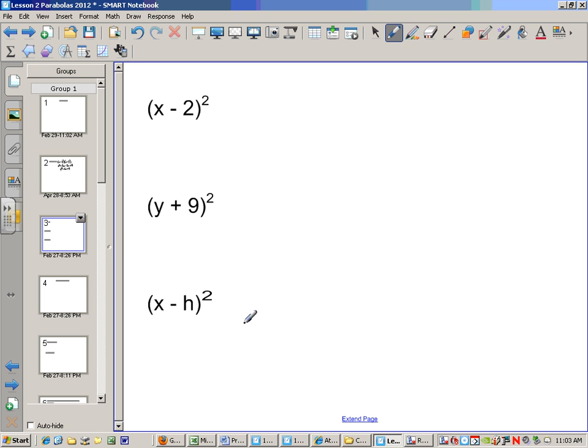Take a second and pause the video and do these three on your own. This one will be x squared minus 4x plus 4. This one will be y squared plus 18y plus 81, and this one would be x squared minus 2hx plus h squared.